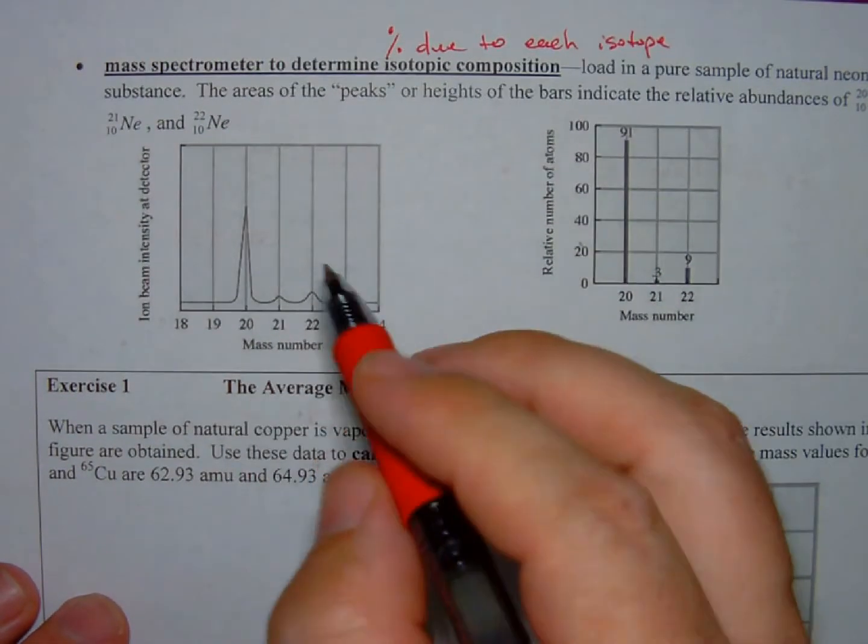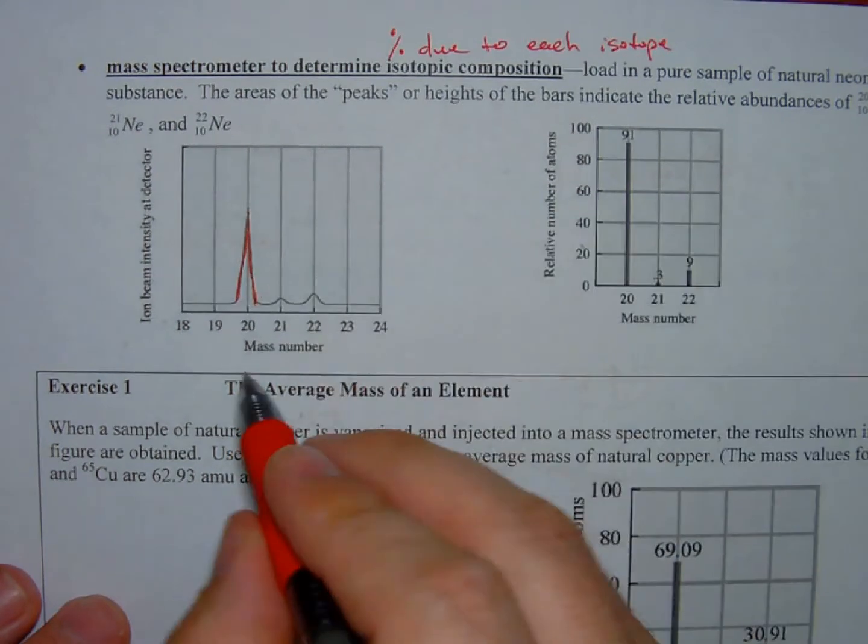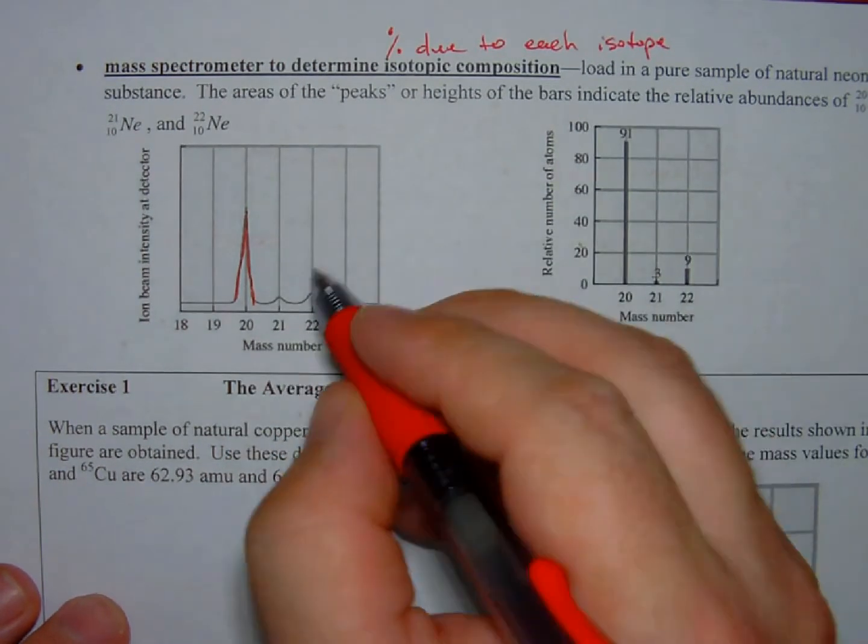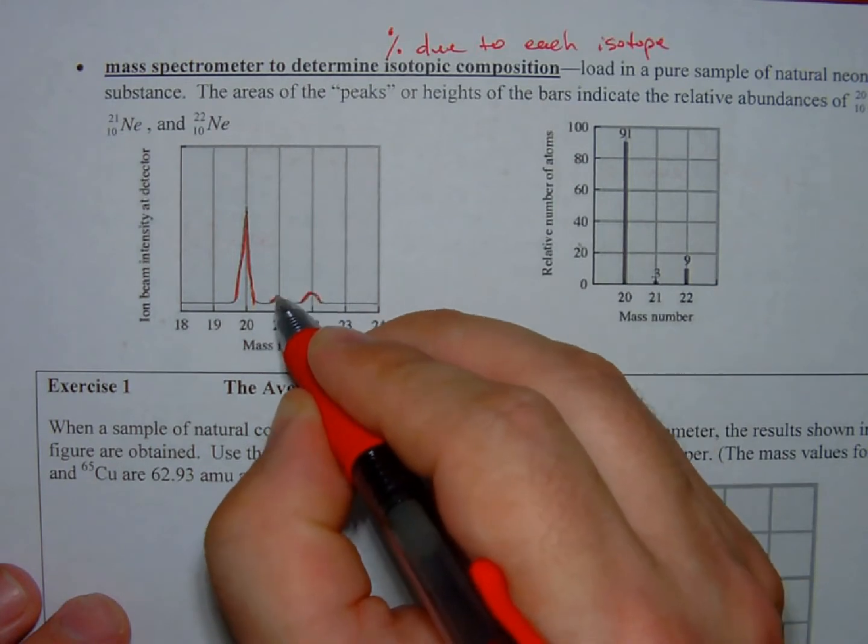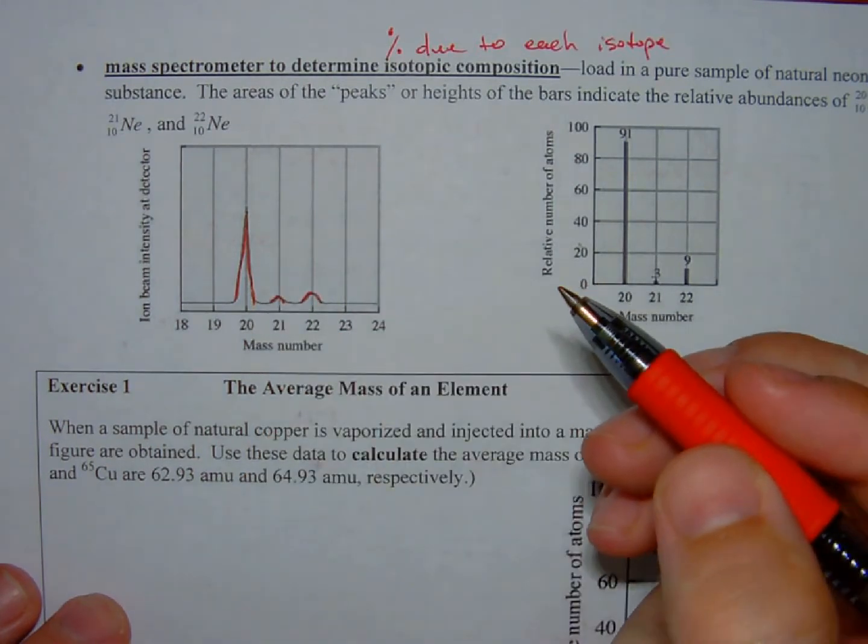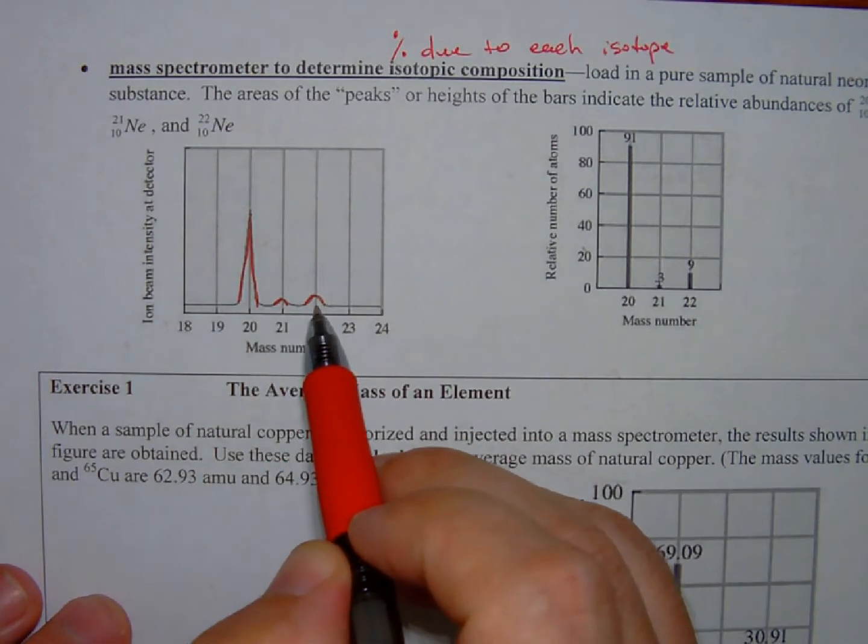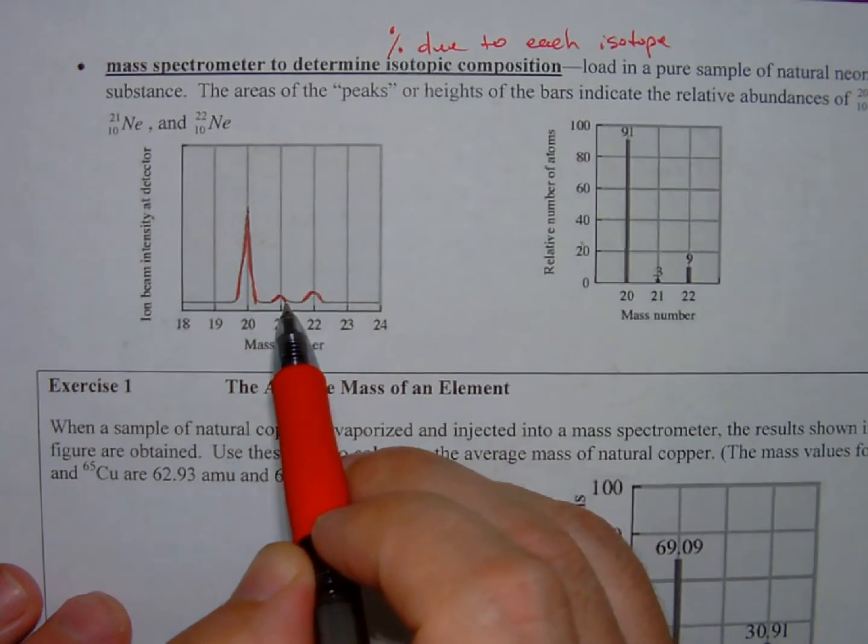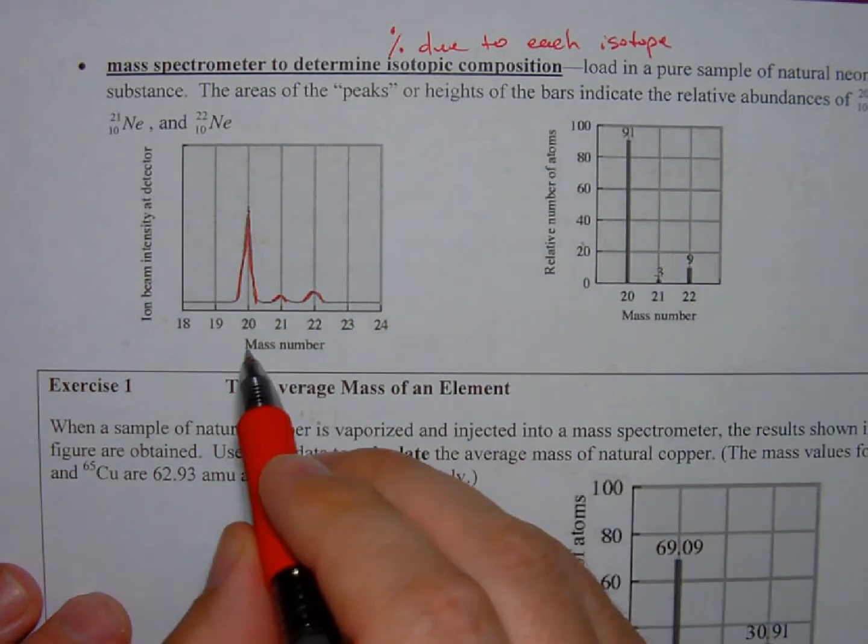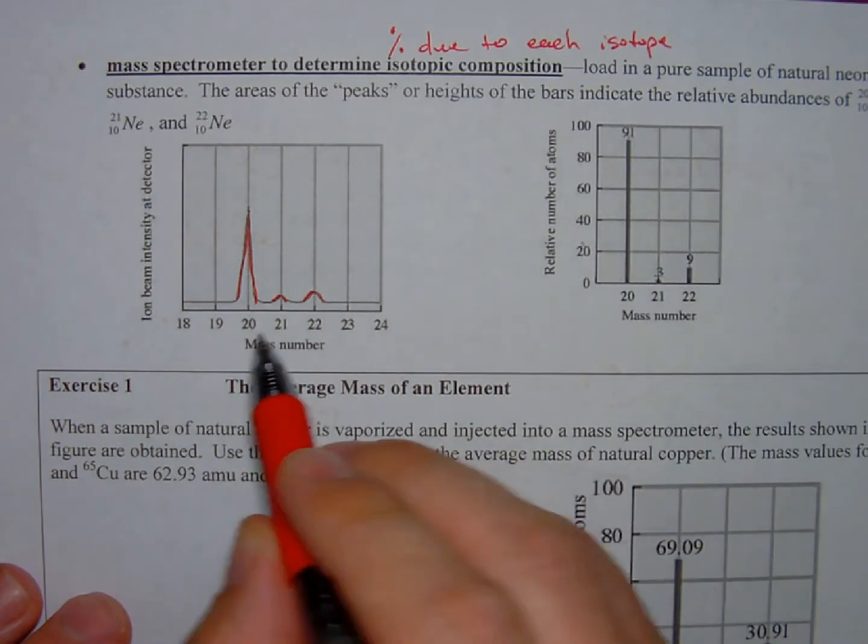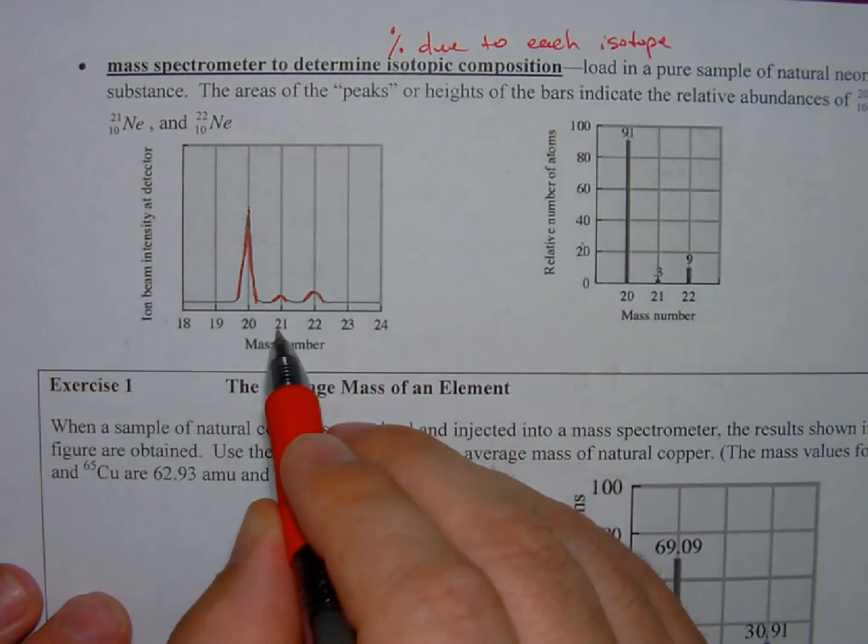And down here on the x-axis, we have the mass number. We see that there is a very large peak at 20, at a mass number of 20. We have a much smaller peak at 22 and an even smaller peak at 21. This tells us that there's more intensity at 20, much less at 22, and even less at 21. This tells us that there is more neon-20 than there is neon-22, and even less neon-21.